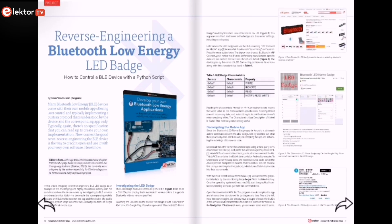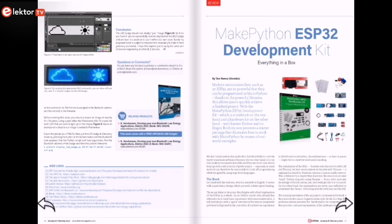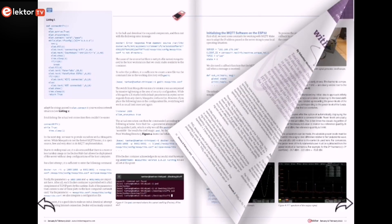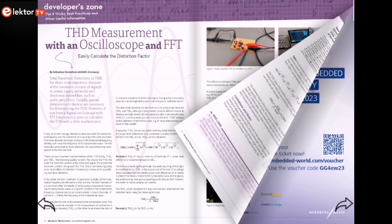You'll learn how to reverse-engineer a Bluetooth low energy LED badge. In another article you'll discover the Mate Python ESP32 dev kit. In the next article you'll learn how to calculate the distortion factor with no need for any special measurement devices.